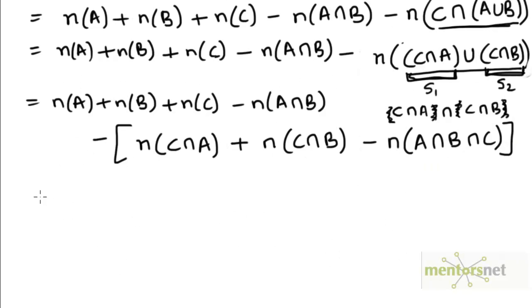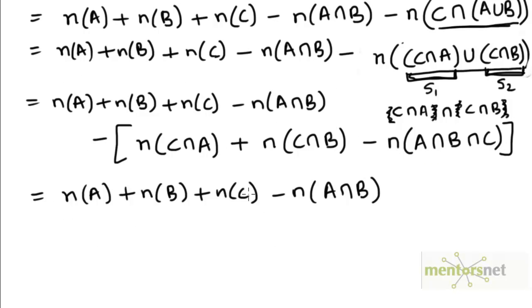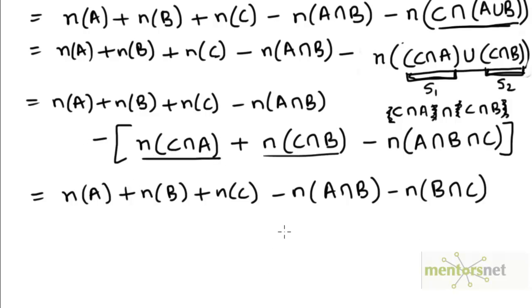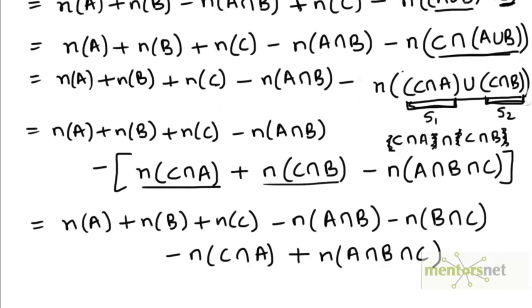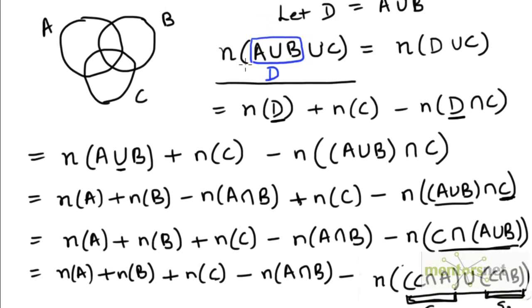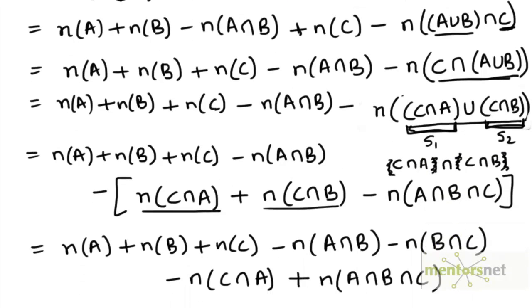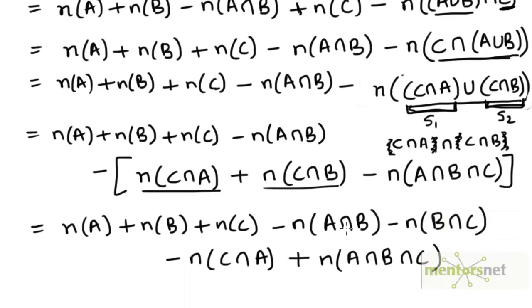So now we can open this bracket. The result is: minus the number of elements in B intersection C, minus the number of elements in C intersection A — and since we have minus and minus, that becomes plus — and the last term is plus the number of elements in A intersection B intersection C. So now we have an expression for the number of elements in A union B union C exclusively in terms of the individual sets A, B and C and their mutual intersections.